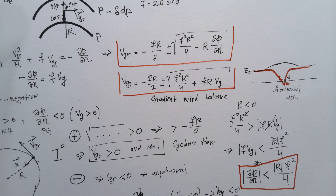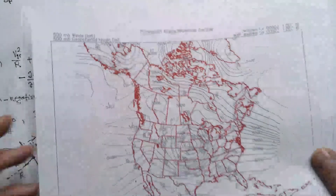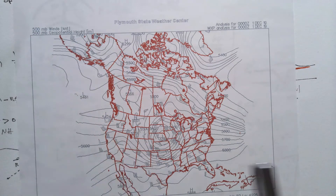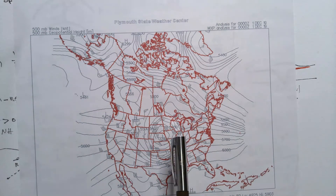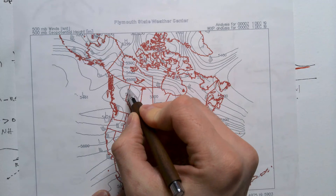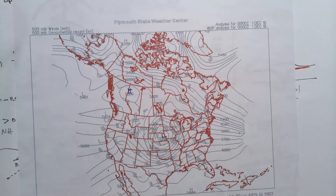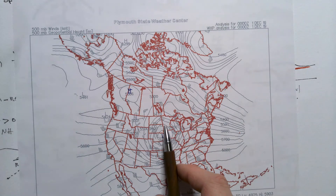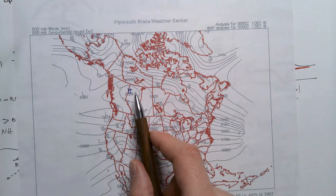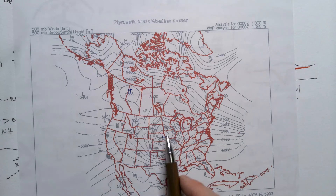A synoptic map of 500 mbar geopotential height and associated winds illustrates this directly. Notice that winds close to the center of the low-pressure system are very strong and counterclockwise, while near the high-pressure system there is a very broad, widely-spaced pressure gradient and very weak winds.